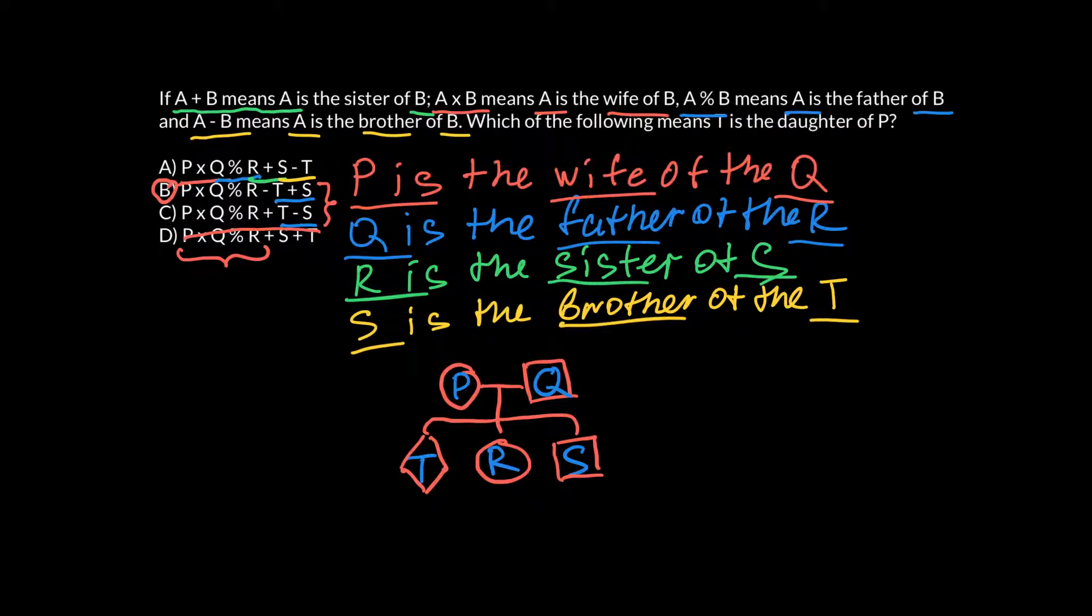But what if we choose answer C? T minus S, what does it mean? This means that the first is the brother of the second. So T here would be brother of the second whose sex is not specified. So as you see, the correct answer is B.